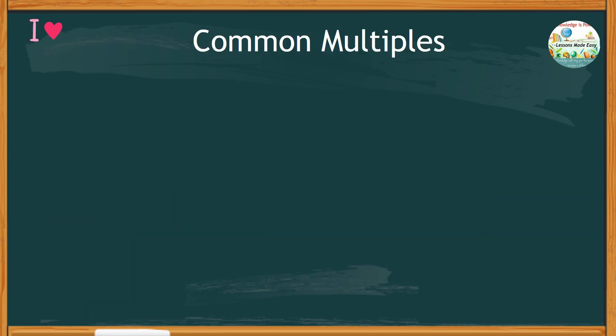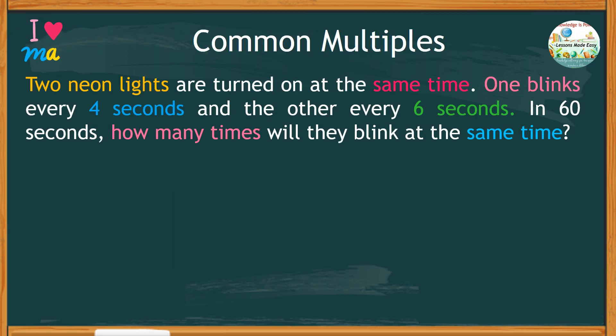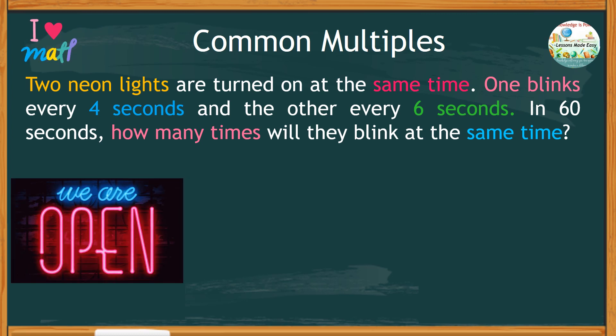Let's take a look at the given problem carefully. We have two neon lights. One blinks every 4 seconds and the other every 6 seconds. Given a time of 60 seconds, how many times will they blink at the same time?